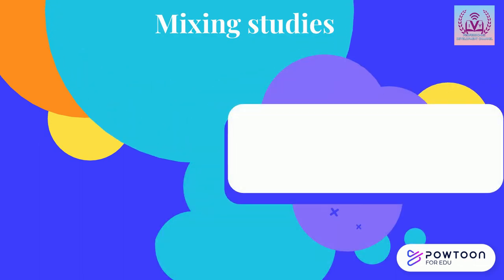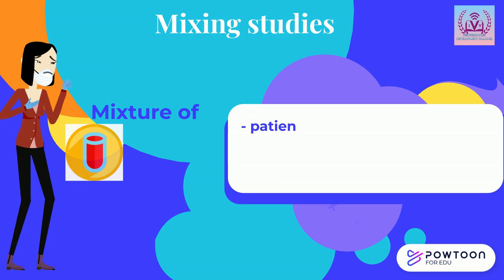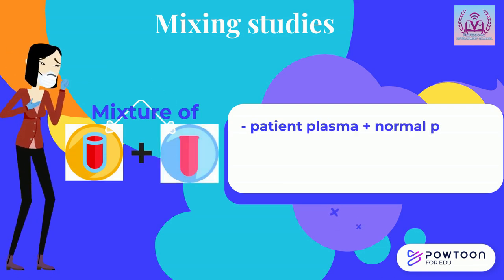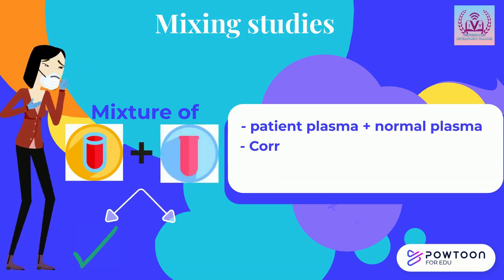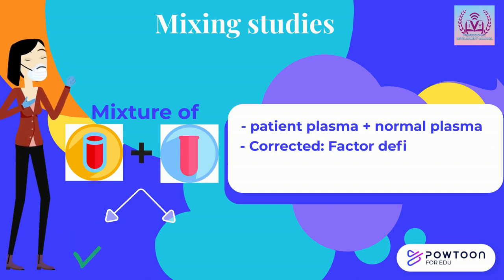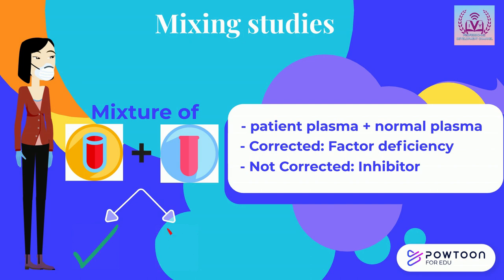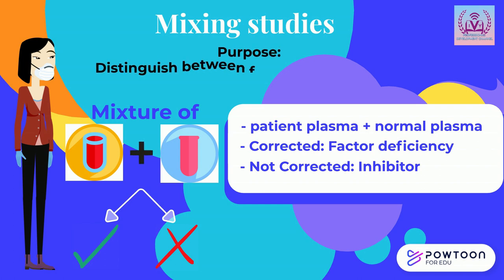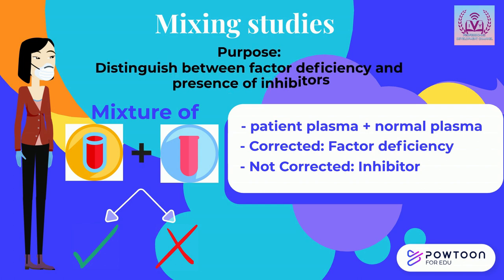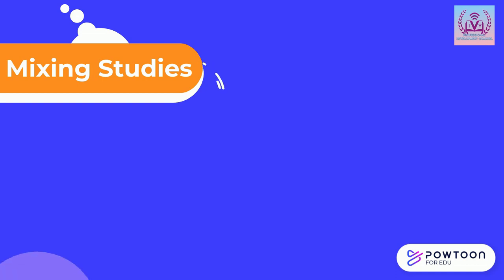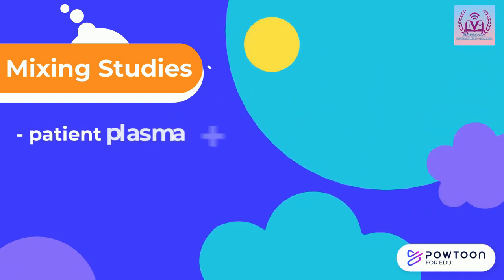Mixing studies represent tests performed on a mixture of patient plasma and normal plasma. If the mixing corrects the test results, a factor deficiency would be suspected. Otherwise, failure to correct suggests an inhibitor interfering with one or more coagulation factors, or the presence of a lupus anticoagulant. The primary purpose of mixing studies is to distinguish between factor deficiencies and the presence of inhibitors in the coagulation process.